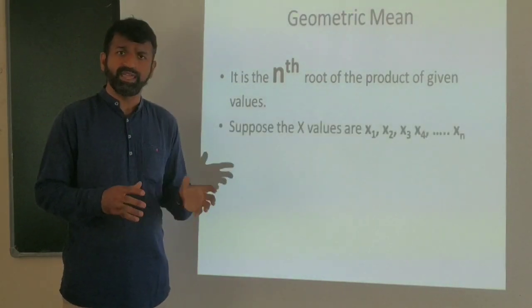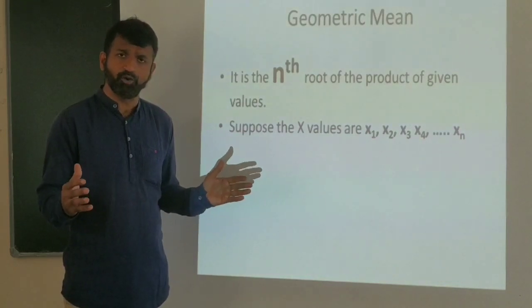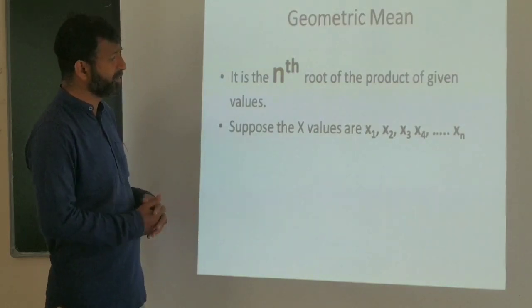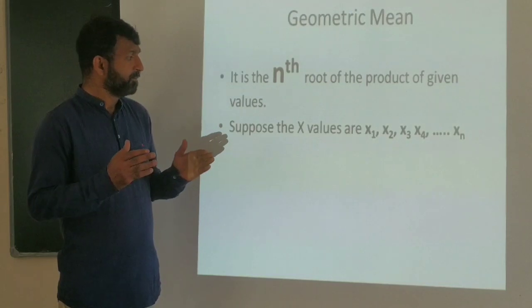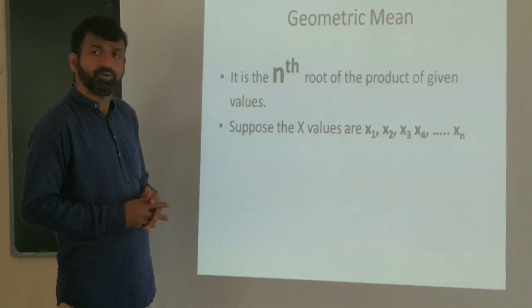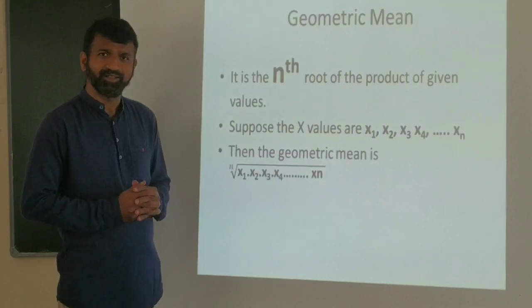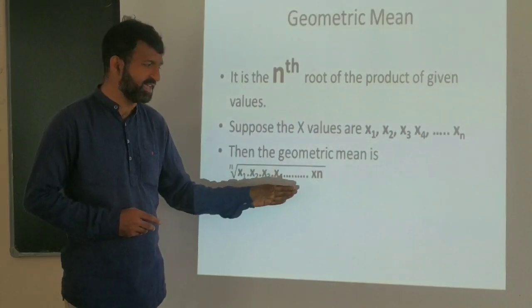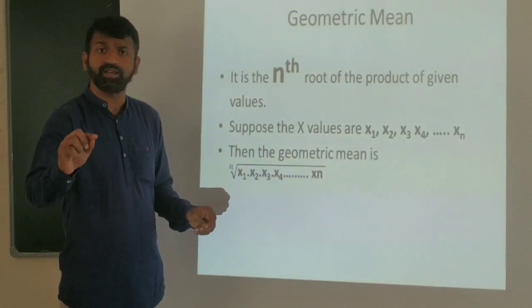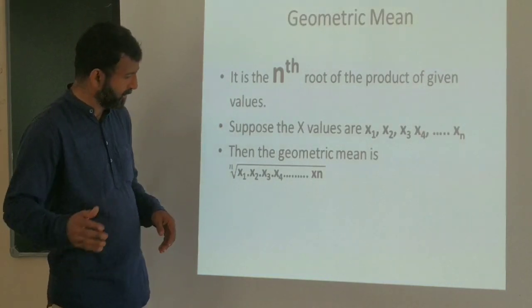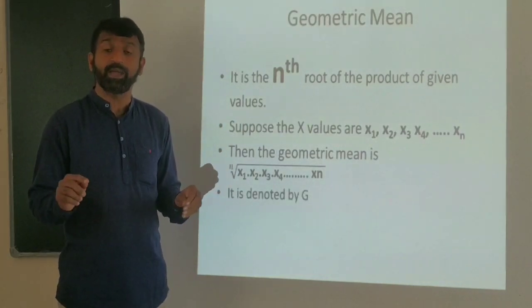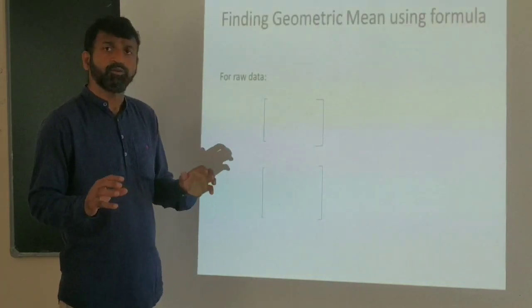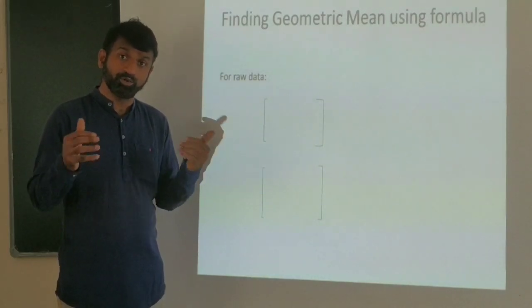Suppose you want to denote the values as x1, x2, x3, x4, and so on up to xn, where n is the number of observations. The geometric mean is the nth root of the product x1 · x2 · x3 · x4 · … · xn.